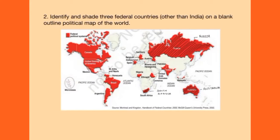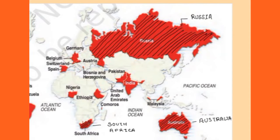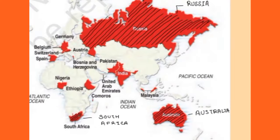Next question: identify and shade three federal countries other than India on a blank outline political map of the world. You can show three federal countries other than India on the political map of the world. We have marked Australia, South Africa and Russia here, shaded with black pencil. You can mark countries of your own choice.